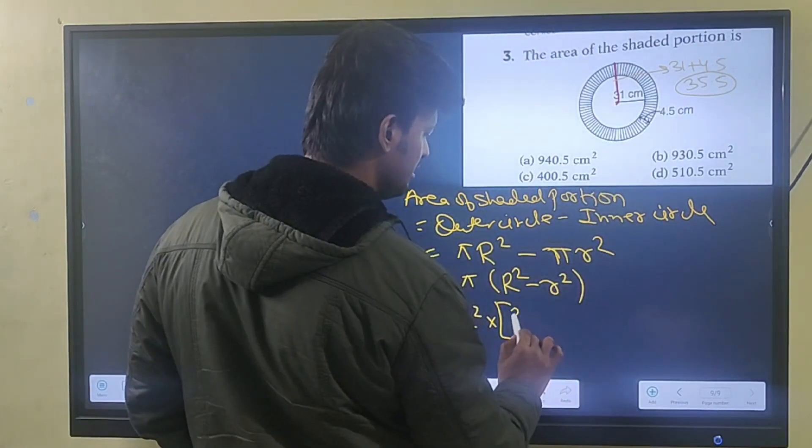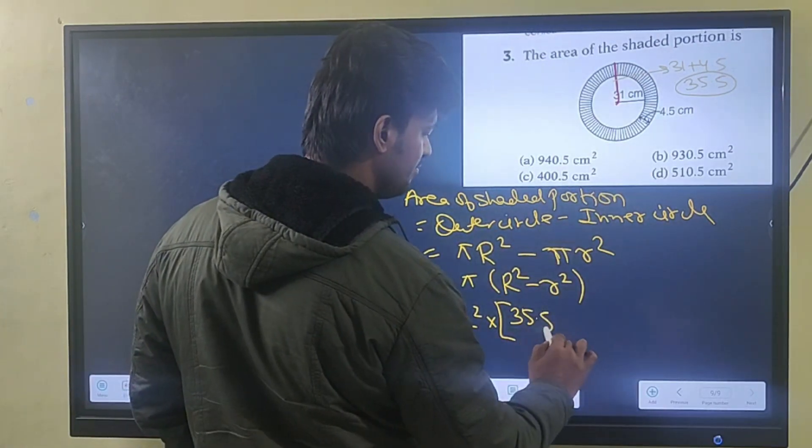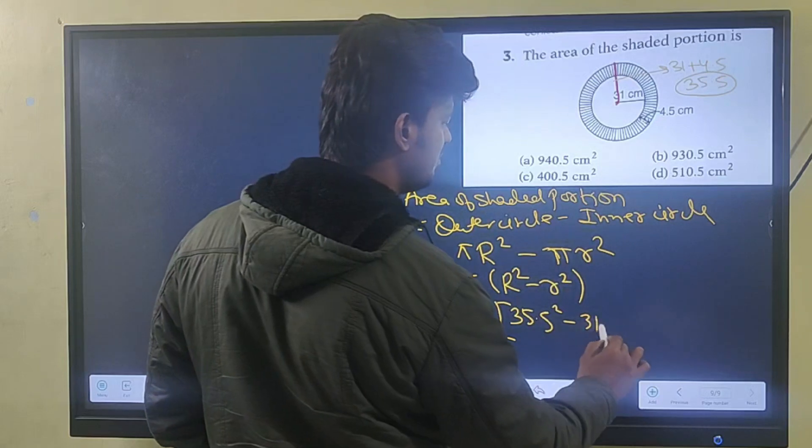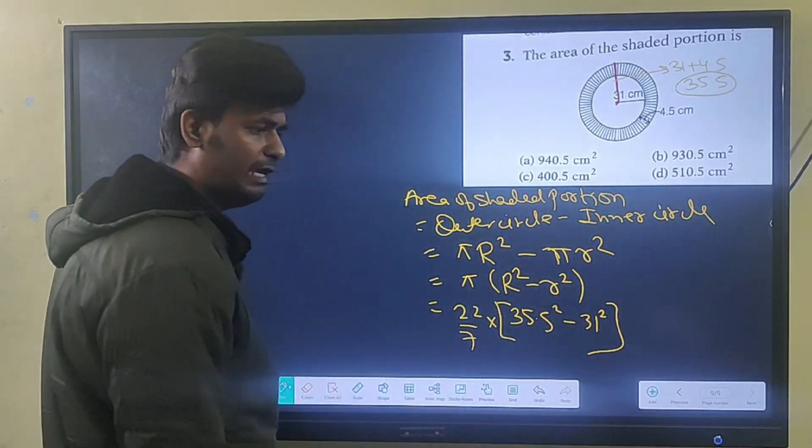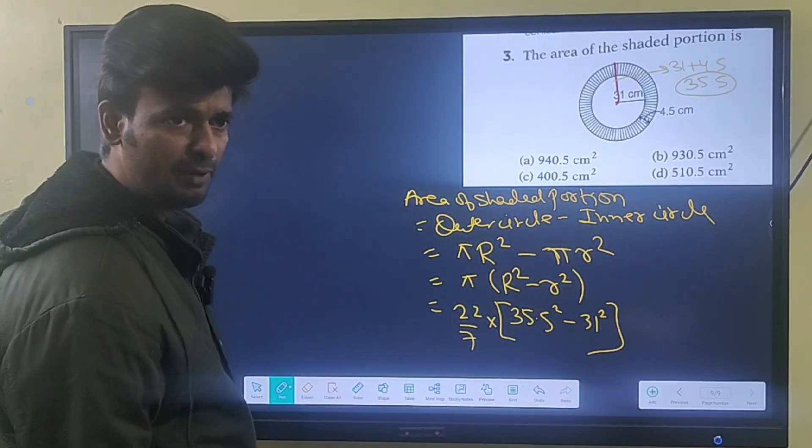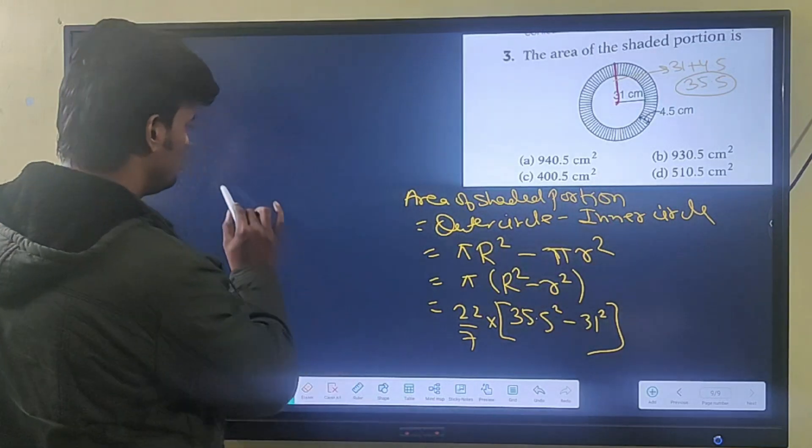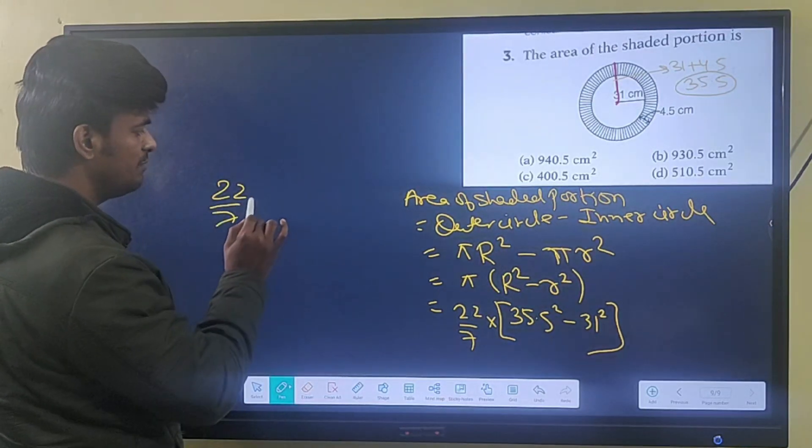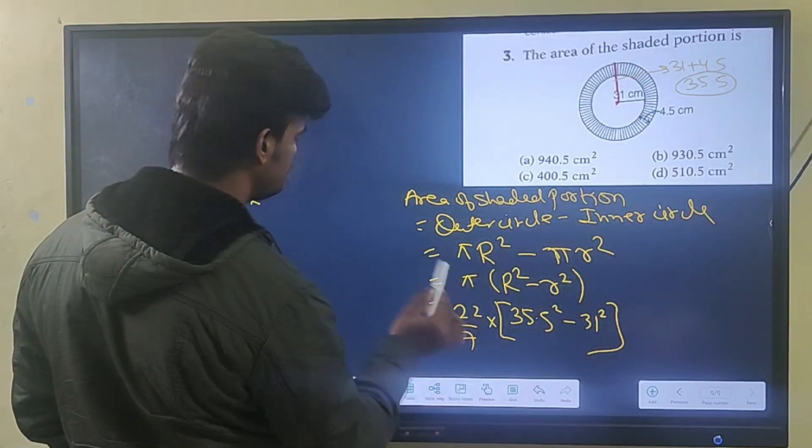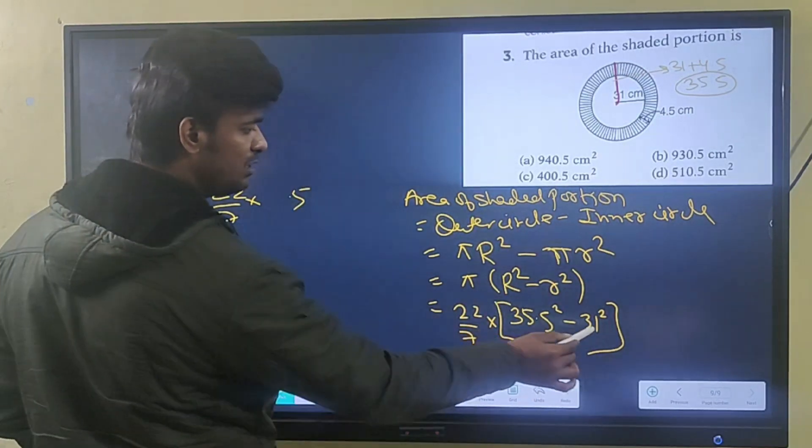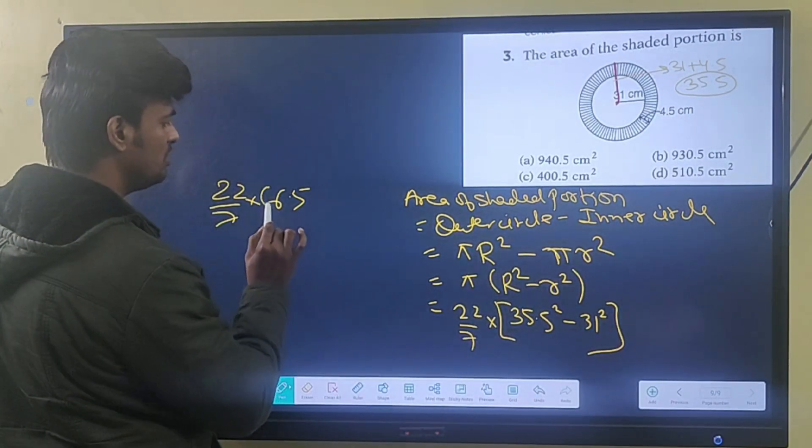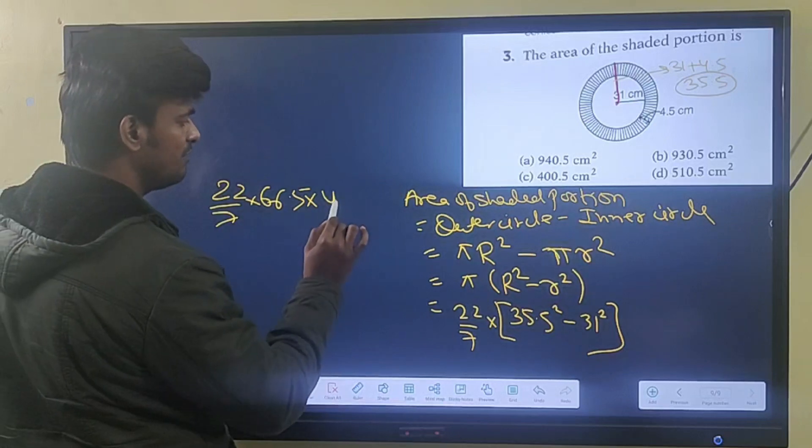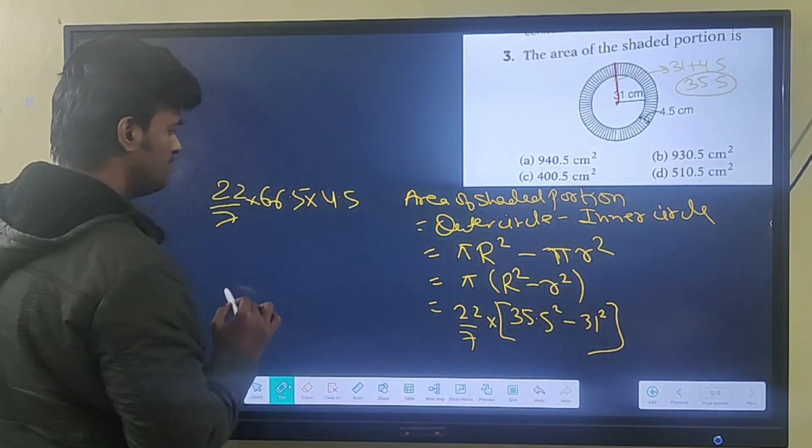Capital R value is 35.5 squared minus 31 squared. Using a plus b, a minus b formula: 22 by 7 multiply by 35.5 plus 31 and 35.5 minus 31.